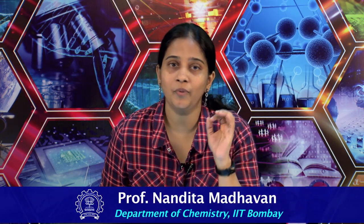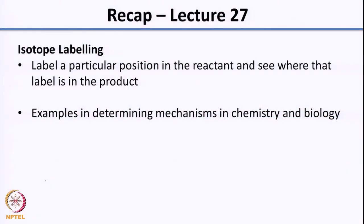Welcome back. In the last class we had looked at how you can use isotopes to put labels on molecules. You can label specific positions of molecules using isotopes, then observe how the isotope changes its position from reactant to product. This is a good way to figure out if the mechanism involves a rearrangement or not, and it also gives you tremendous insight into the nature of the intermediate. We had looked at several examples on how labeling can be used to determine the mechanism.